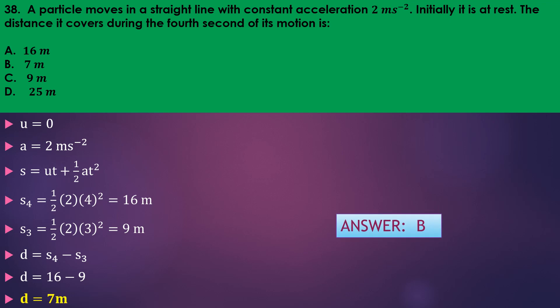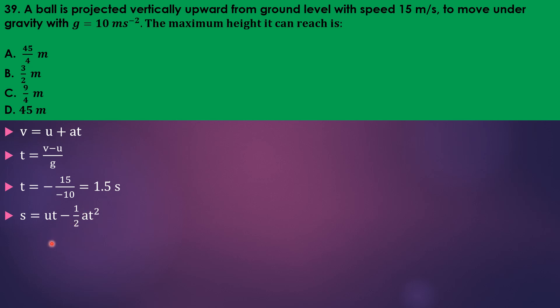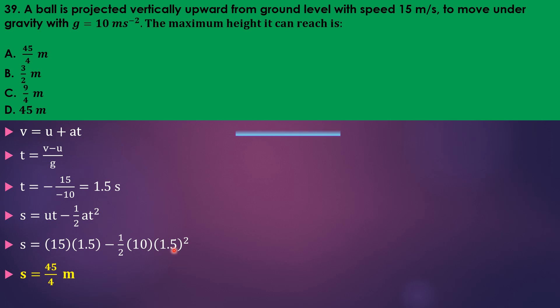A ball is projected vertically upward from ground level with speed 15 m/s under gravity with g = 10. At maximum height velocity is zero, so using v = u + at gives t = 1.5 s. Substituting into s = ut − ½at²: s = 15 × 1.5 − ½ × 10 × 1.5² = 45/4 metres. Answer is A.